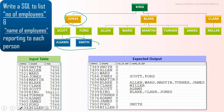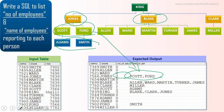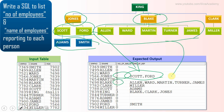Directly two people are reporting under John, so we need to show the number of reporting employees as two, and print their names. Scott and Ford are reporting under John. Same way, under Blake there are five people reporting under him — against Blake we show five, and the names are Allen, Ward, Martin, and Turner.